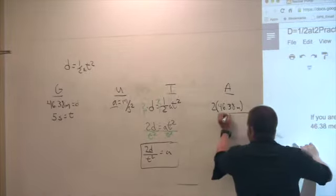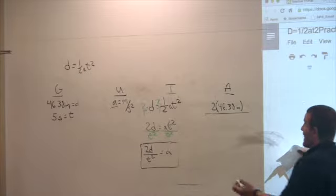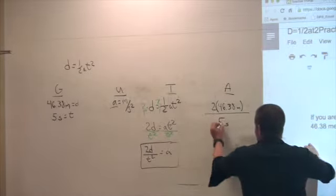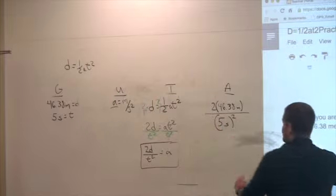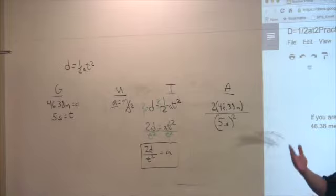Divided by what? What's my T? Five squared. Five S squared. Everybody see how I did that? Notice how I wrote everything down. Notice how I did steps.